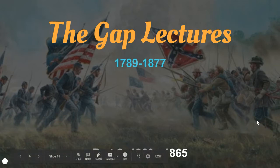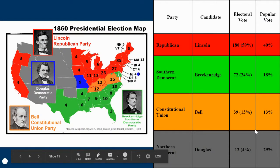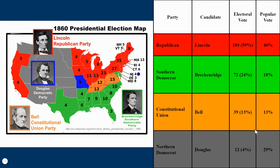In the presidential election of 1860, there are four people running. Representing the Republican Party is Abraham Lincoln. Remember, this is not the Republican Party you know today — it is a coalition party made up of pieces from other parties. It includes free soilers who opposed slavery because it takes jobs away from poor white men — not for moral reasons — as well as anti-slavery Whigs and Democrats who left their party to join this coalition known as the Republican Party.